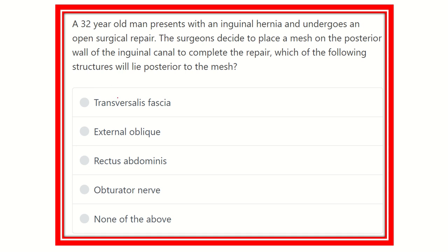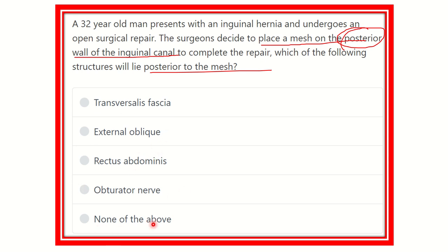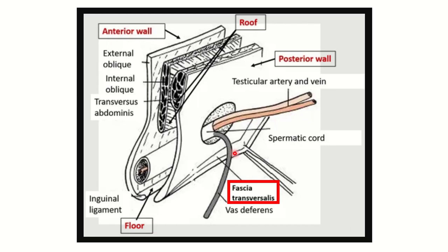In this question, a 32-year-old man presents with an inguinal hernia and undergoes surgical repair, and the surgeon places a mesh on the posterior wall of the inguinal canal. We have to find out the posterior wall of the inguinal canal on which the mesh will lie. The options are: transversalis fascia, external oblique muscle, rectus abdominis muscle, obturator nerve, and none of the above.